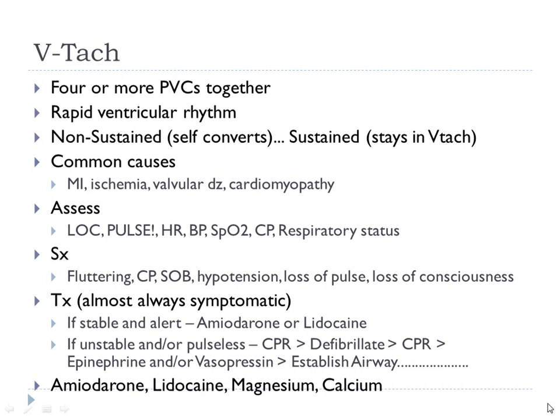I'll go through the ACLS algorithm quickly so you know your first steps if your patient is pulseless. Magnesium, calcium, and potassium imbalances are often culprits with these dysrhythmias. These patients should get labs to check electrolytes — correcting calcium or potassium might fix the whole problem. Treat the underlying cause. Electrolyte imbalances cause a lot of these problems.